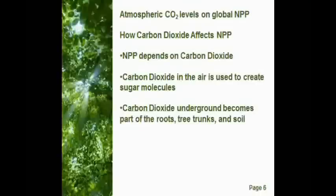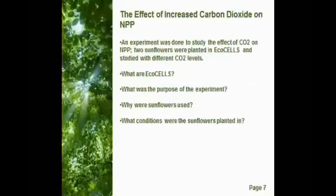How does carbon dioxide affect NPP? Plant growth and NPP depend on the balance of carbon gain through photosynthesis and carbon loss through respiration. Plants capture solar energy through photosynthesis, converting carbon dioxide in the air into sugar molecules they use for food. In the process of making their food, plants also provide the oxygen we need to breathe, and the carbon dioxide underground becomes part of the roots, leaves, stalks, or tree trunks and the soil.